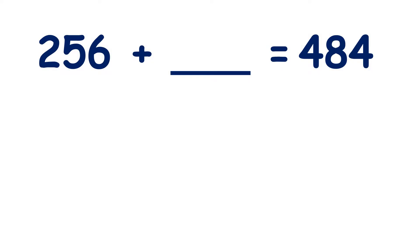Here we have 256 plus something equals 484. So with a number family triangle, we know that we add the bottom two numbers to get the top number. But we want to find out what this other bottom number is.